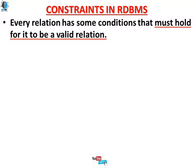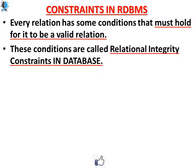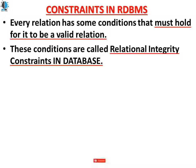Constraints in database management system: every relation has some conditions that must hold for it to be valid. These conditions are called relational integrity constraints. For example, consider a product table and a customer table — when a customer purchases a product, a purchase table is created. This purchase table communicates with both the customer table and the product table, and constraints help maintain the data integrity across these tables.